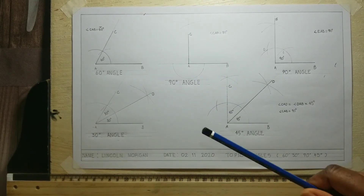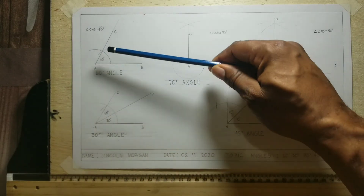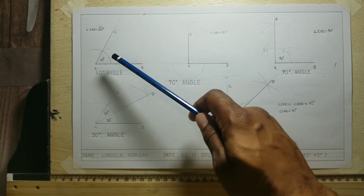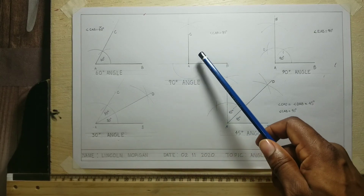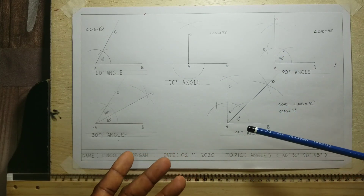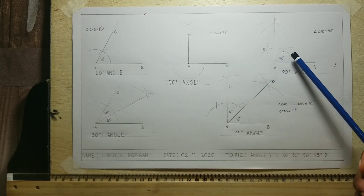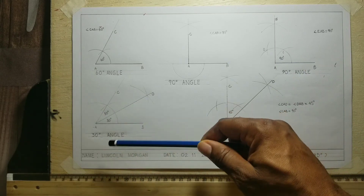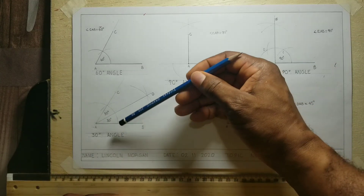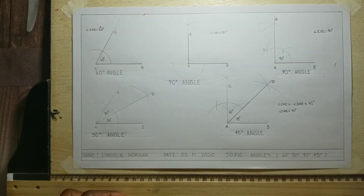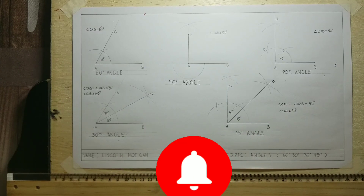Now we have the 90 degree angle and the 60 degree angle. For the 90 degree angle, in order to get a 45 degree angle, we bisect the 90 degree angle. If we wanted a 15 degree angle, what we would do is bisect any one of these 30 degree angles. Thanks for watching. Have a wonderful day.